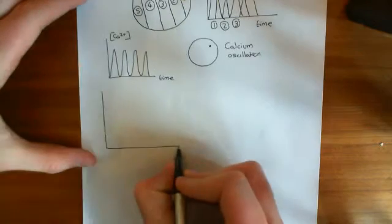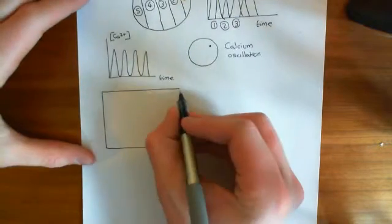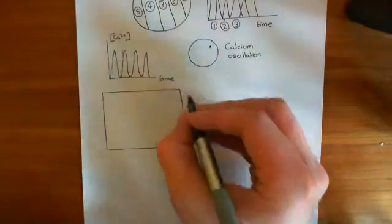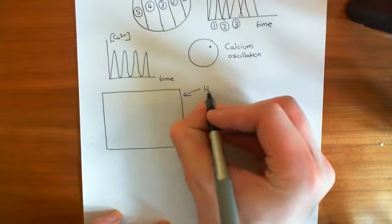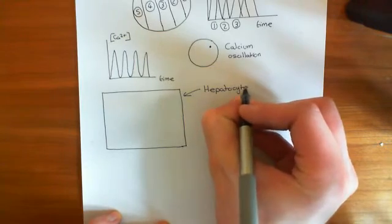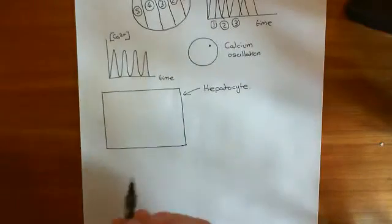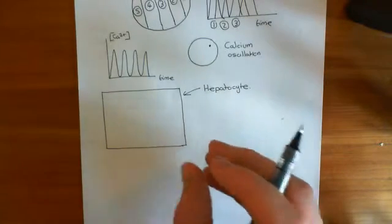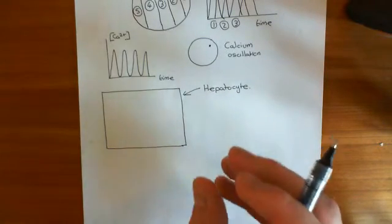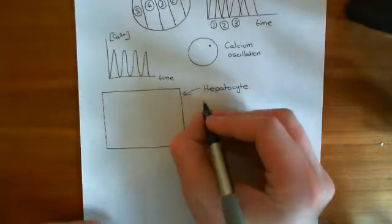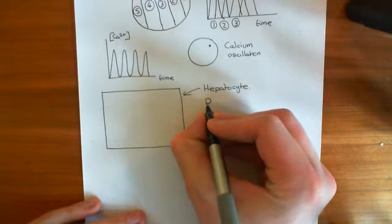Here's another physiological example: a hepatocyte, which is a liver cell — a very different example from oocytes. We can trigger calcium waves in this hepatocyte in a similar way to those triggered in oocytes. Instead of using a sperm cell, we're going to stimulate it with a drug known as phenylephrine.